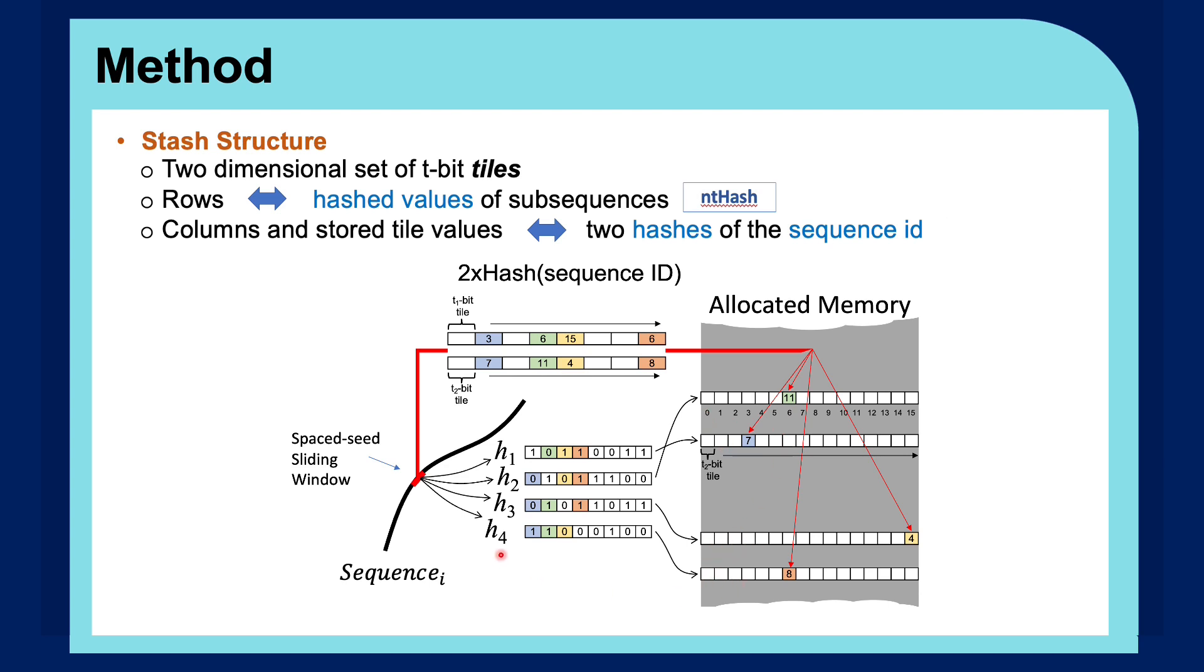In order to combine the ntHash output values with the two sequence ID hashes, we can see that for the i-th spaced seed pattern, the i-th most significant bits of the other spaced seed patterns are concatenated in order to address an index in the sequence ID hashed tiles.